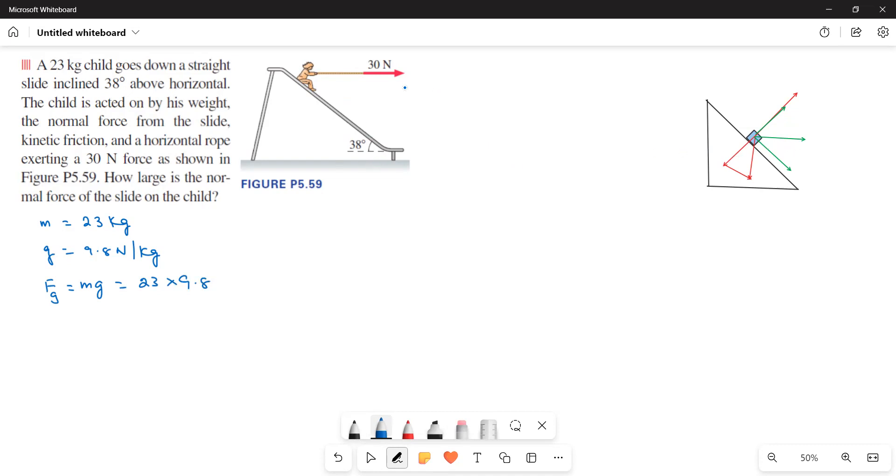Now here is the force exerted by the rope which is 30 N and this is the angle 38 degrees. We will resolve the force exerted by the rope into X component and Y component. So X component is equal to 30 cos 38 and then this Y component is equal to 30 sin 38 degrees.